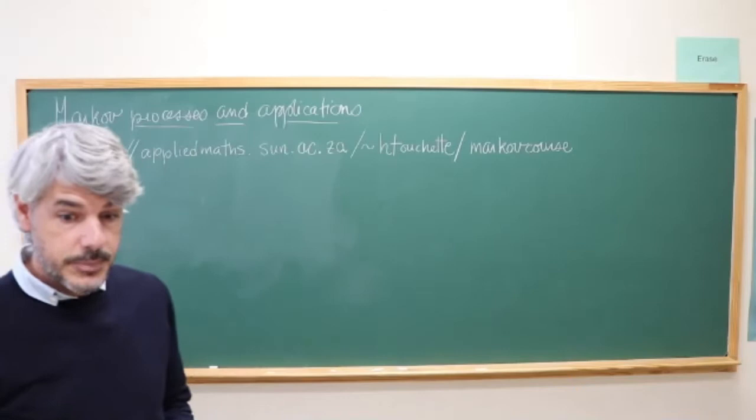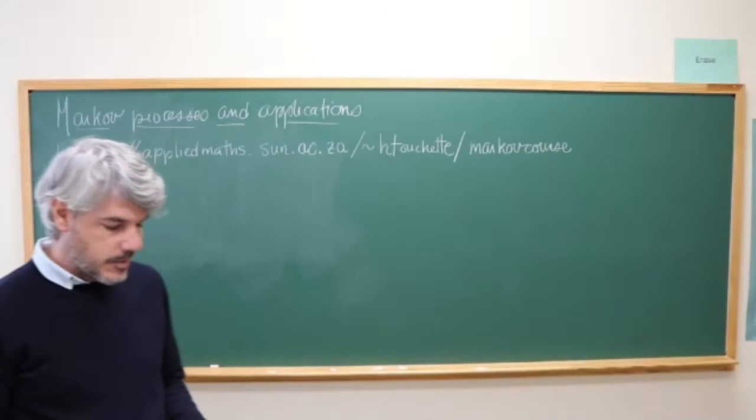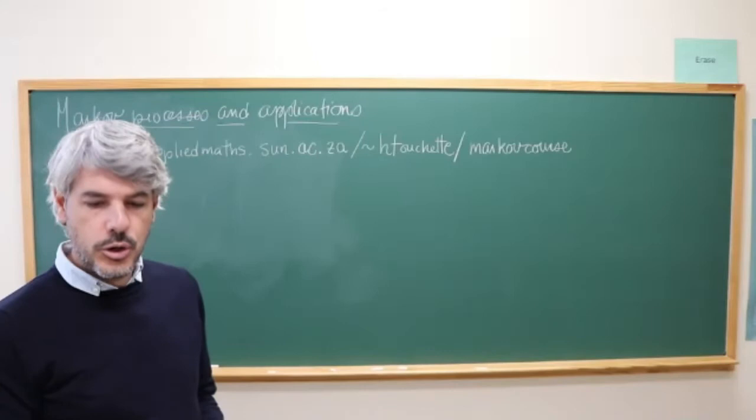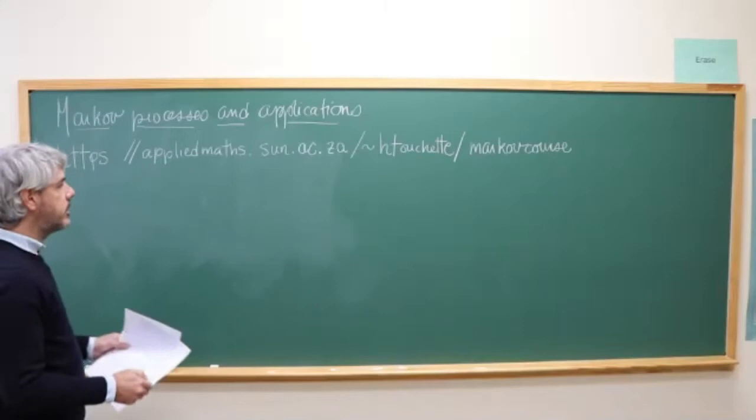I'll start with basic notations about random variables and distributions, because we'll be using that notation and language as we go along in the course. The first page I'll cover is actually part of chapter one, but chapter one has about 15 pages — it's a recap on probability theory — and I'm not going to go over all of it. Have a look at chapter one if you're not familiar or want to refresh your material on probability theory.